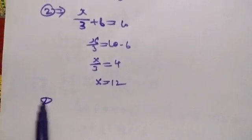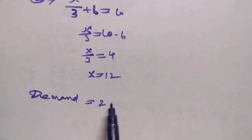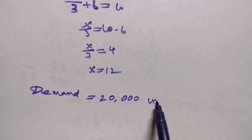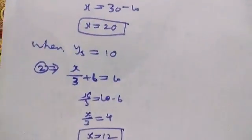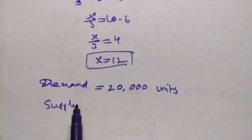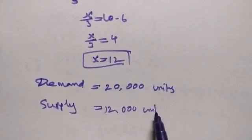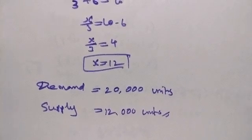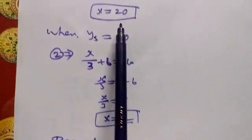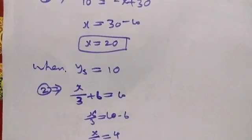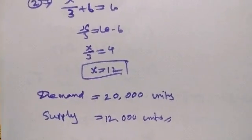Therefore, demand equals 20,000 units and supply equals 12,000 units when price is Rs.10.